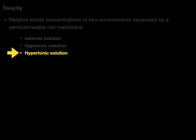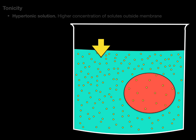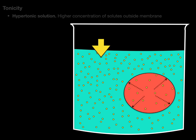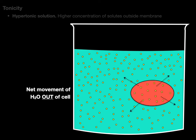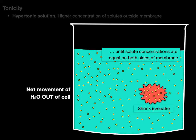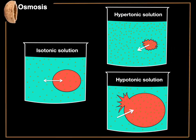Now a hypertonic solution has a higher concentration of solutes outside the cell membrane. Water flows from inside the cell towards the saltier side, and the net movement of water is out of the cell until the solute concentrations are equal on both sides of the membrane, or the cell shrinks — we call that crenation. And that, my friends, is osmosis in a nutshell.